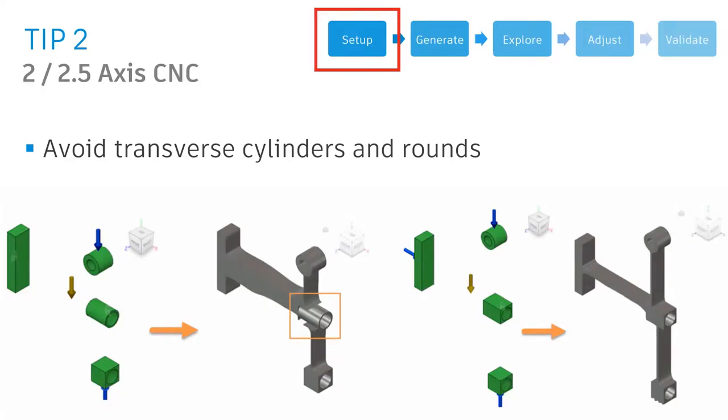One that's growing in popularity are two and two and a half axis CNC constraints for generative design. The reason for that is because these are the cheapest to manufacture, the easiest to machine components coming out of generative design. So they're very practical for those in the traditional manufacturing space.